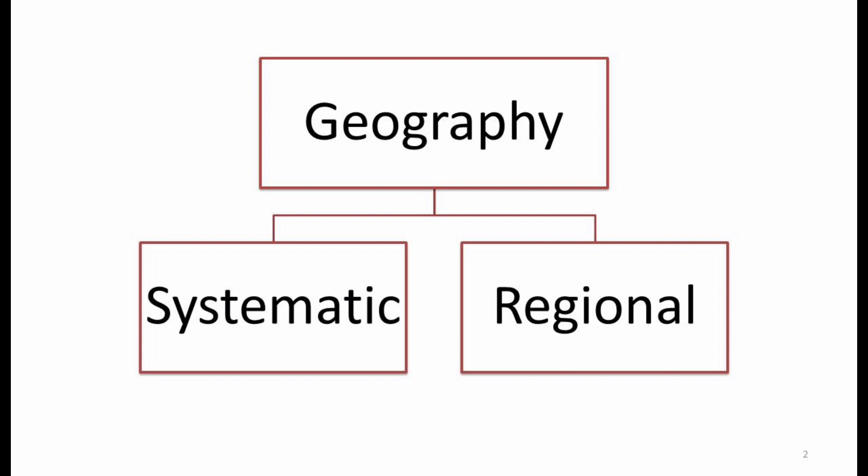Let's quickly look at systematic geography. Systematic geography is also known as general geography or universal geography, and it derives its name from the word 'system,' meaning studying a particular thing in an ordered, systematic way. Studying the elements of geography — the laws, theories, concepts, methods, techniques, and history of that subject — can be termed as the systematic part of that subject.